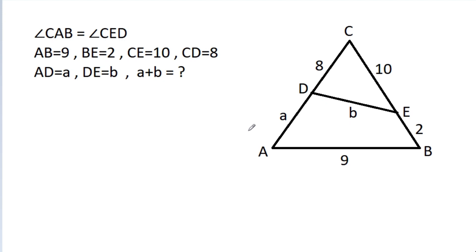In this video, we have given that angle CAB is equal to angle CED, and AB is 9, BE is 2, CE is 10, CD is 8, AD is A, and DE is B. Then we have to find A plus B.